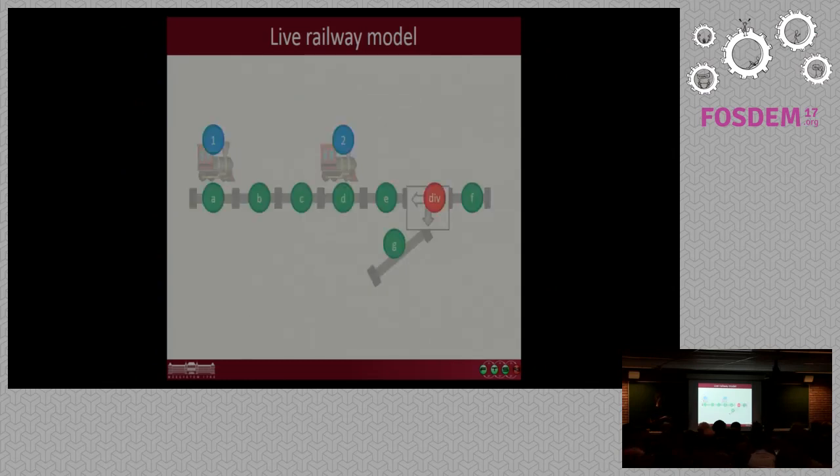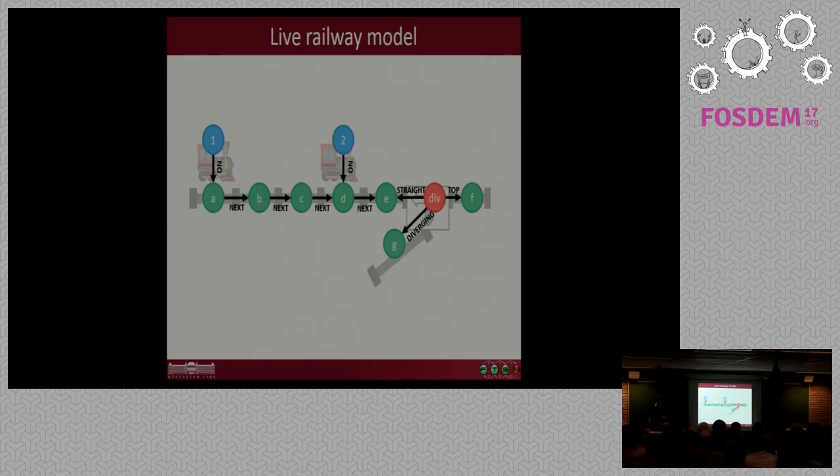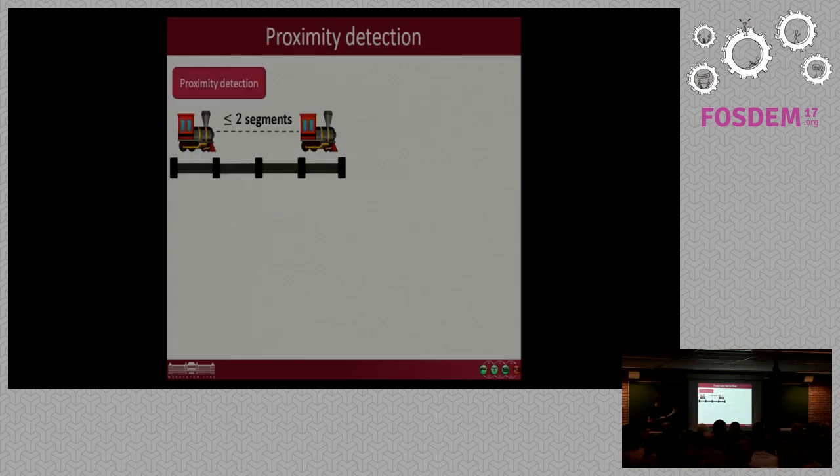Okay, so how do we model this as a graph? It's not that difficult. We just say that each segment will be a node in the graph, the trains will be nodes in the graph, and then the switch will be a node in the graph storing its position as divergent. So we add some edges. Now we have the trains are on segments, the segments are stored pretty much as a linked list, and then we have the switch with the appropriate directions.